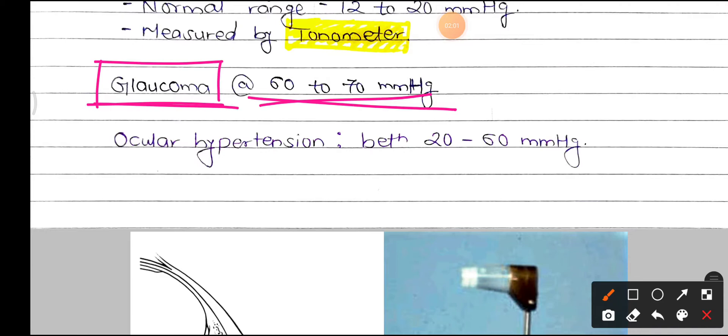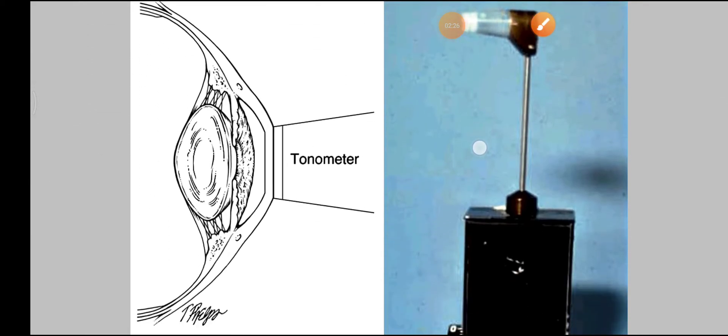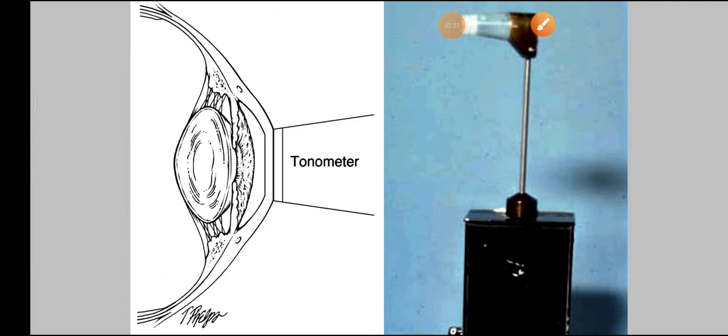In the range of 20 to 60 mm of Hg, it is neither the glaucoma condition nor the normal range. It is known as ocular hypertension. Here is the device, the tonometer, which is used to calculate the intraocular pressure or IOP.